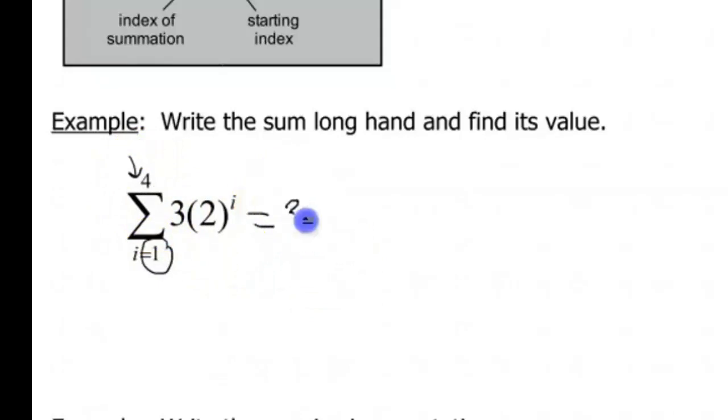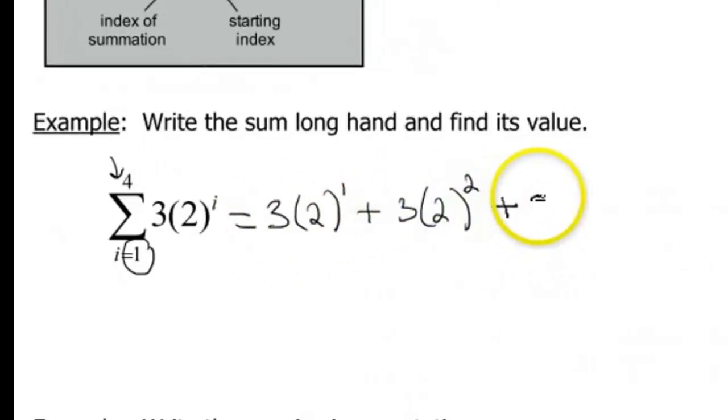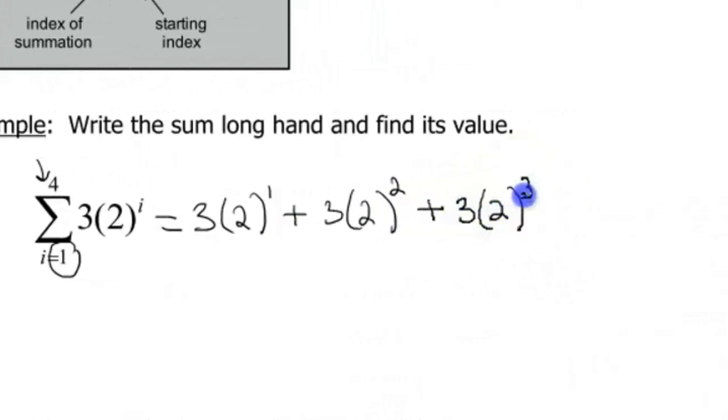Okay, so for this one we're gonna plug in 1 first, so 3 times 2 to the first power. And then we're gonna plug in 2 to the second power. And then we're gonna plug in 3 to the third power. And then we're gonna plug in 4 to the fourth power. Okay, so that's writing the sum longhand.